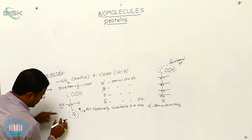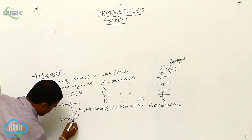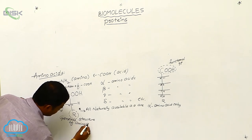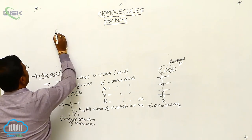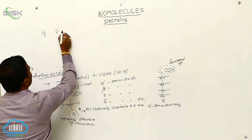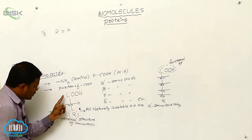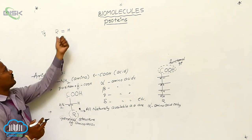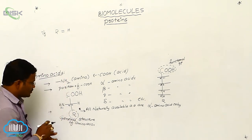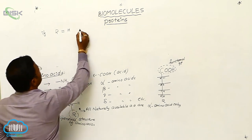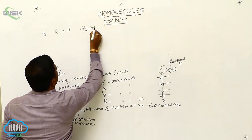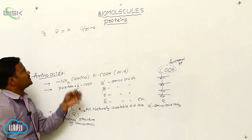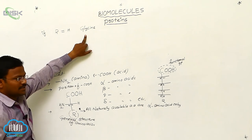In the given general structure of an amino acid, if R is substituted with hydrogen, that means the second carbon is connected to NH2 on the left side and hydrogen on the right side. So in place of R, we write hydrogen, giving us COOH–CH2–NH2. The resulting amino acid is called glycine.